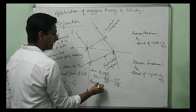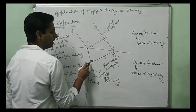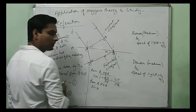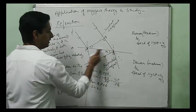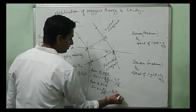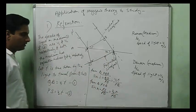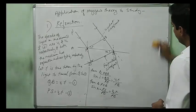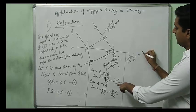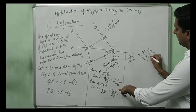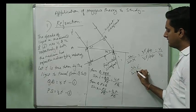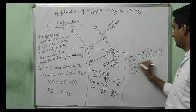Let S be the point where the arc intersects. So PS equals V2 times T. From triangle PQB: sine of I equals QB divided by PB, which is V1T divided by PB. From triangle PSB: sine of R equals PS divided by PB, which is V2T divided by PB. Therefore, sine I divided by sine R equals V1 by V2.